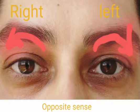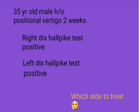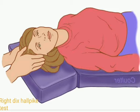I had a 35-year-old male without any comorbidities who had positional vertigo, and when I did the Dix-Halpike test for him, he had a positive test on both sides. I would also like to tell you that the symptoms and the nystagmus was more pronounced on one side than the other — in his case, it was the right side.